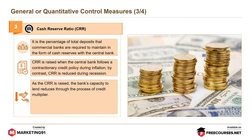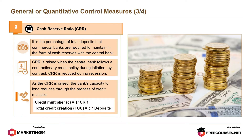As the CRR is raised, the bank's capacity to lend reduces through the process of the credit multiplier. Credit multiplier C equals 1 divided by CRR. That is, total credit creation (TCC) equals C into deposits.